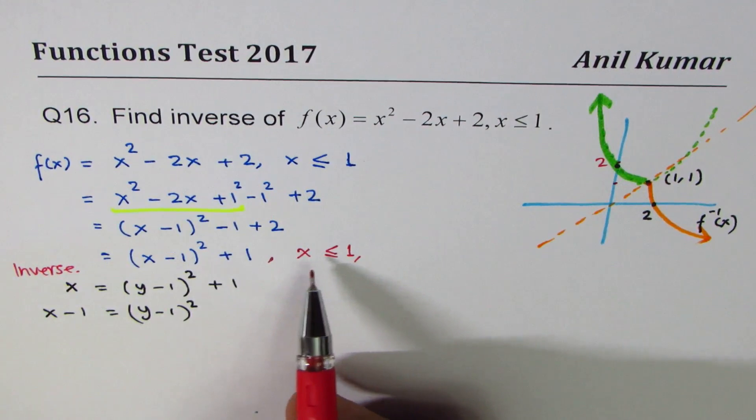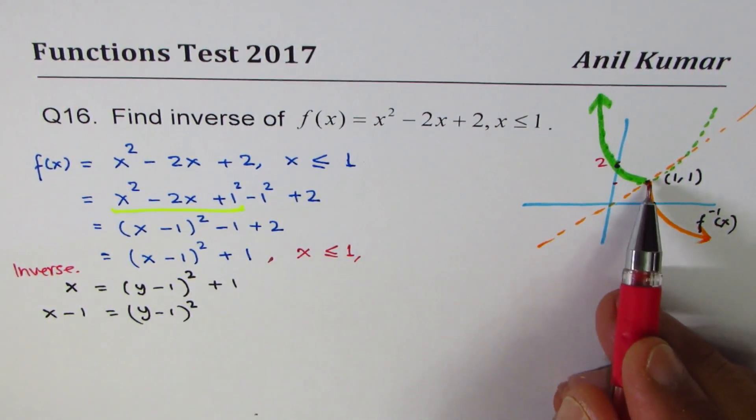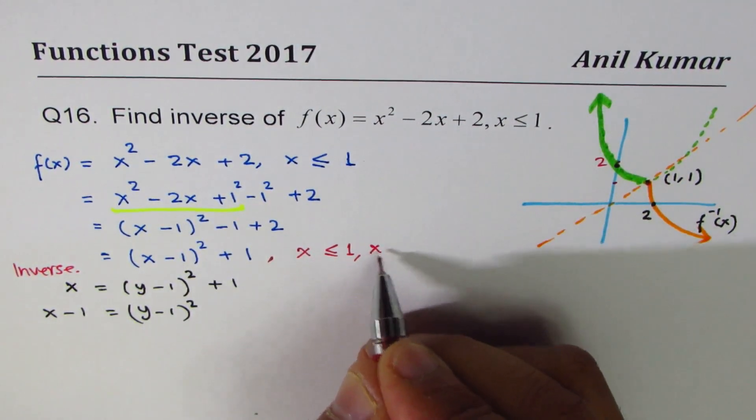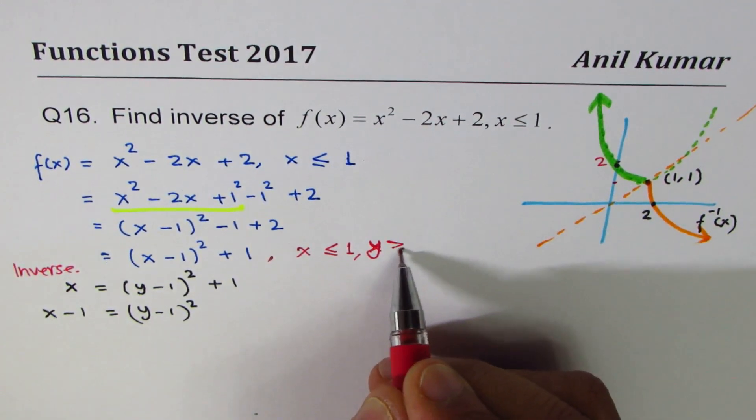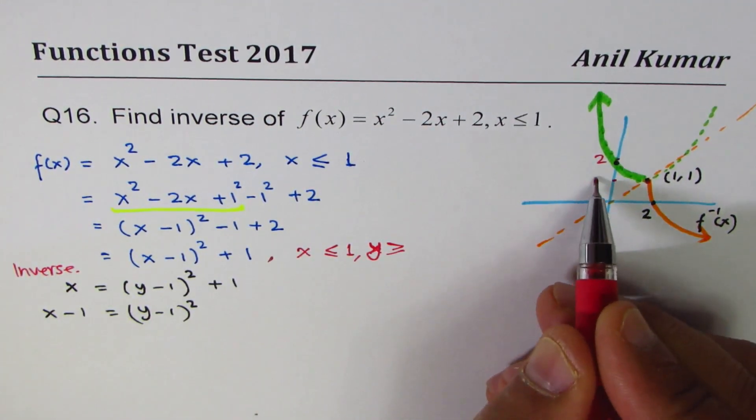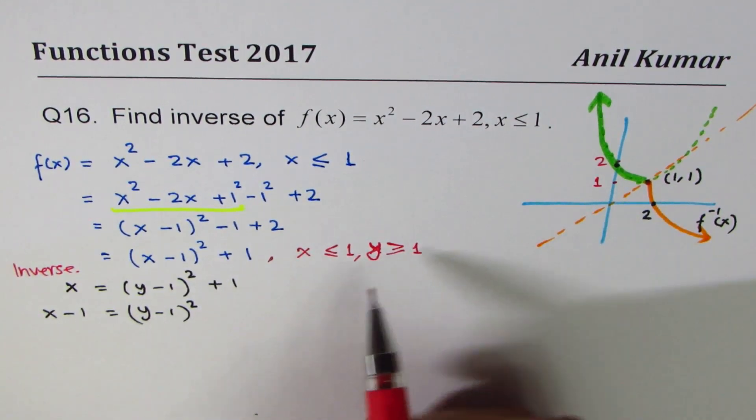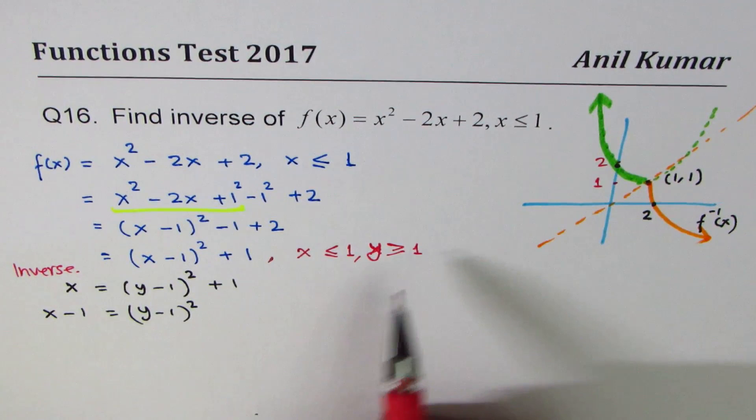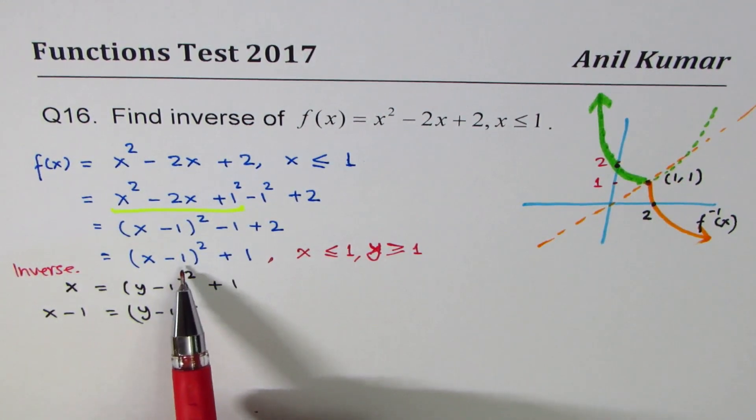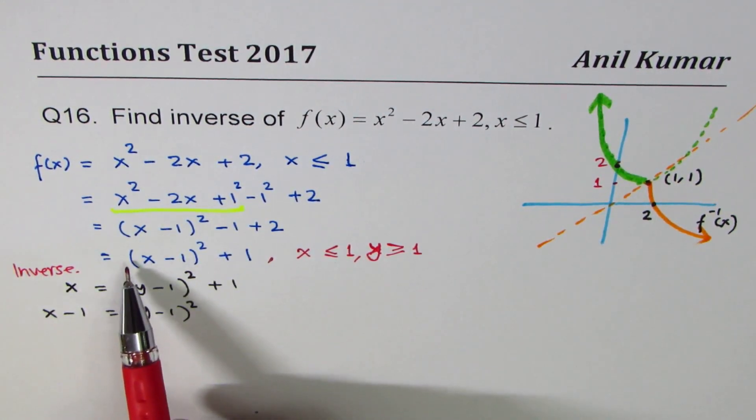Remember one thing before I move forward. What we observed here is that x ≤ 1, but what is the value of y? y is greater than or equal to 1. That's the restriction. When x ≤ 1, y ≥ 1, very clear. Vertex is at (1, 1), parabola opens upwards.